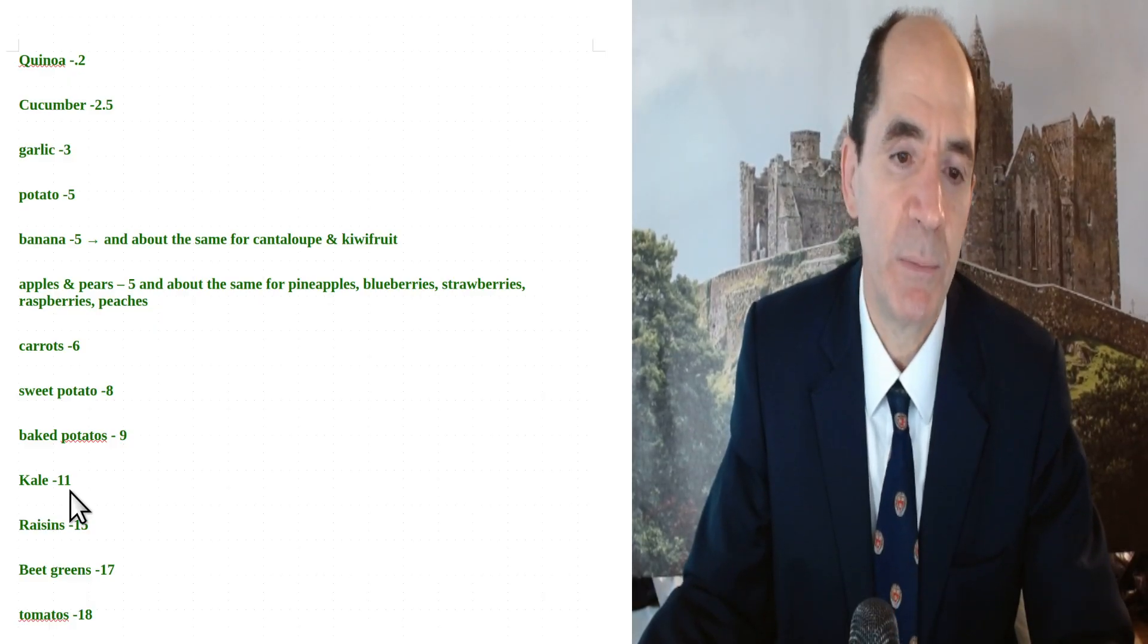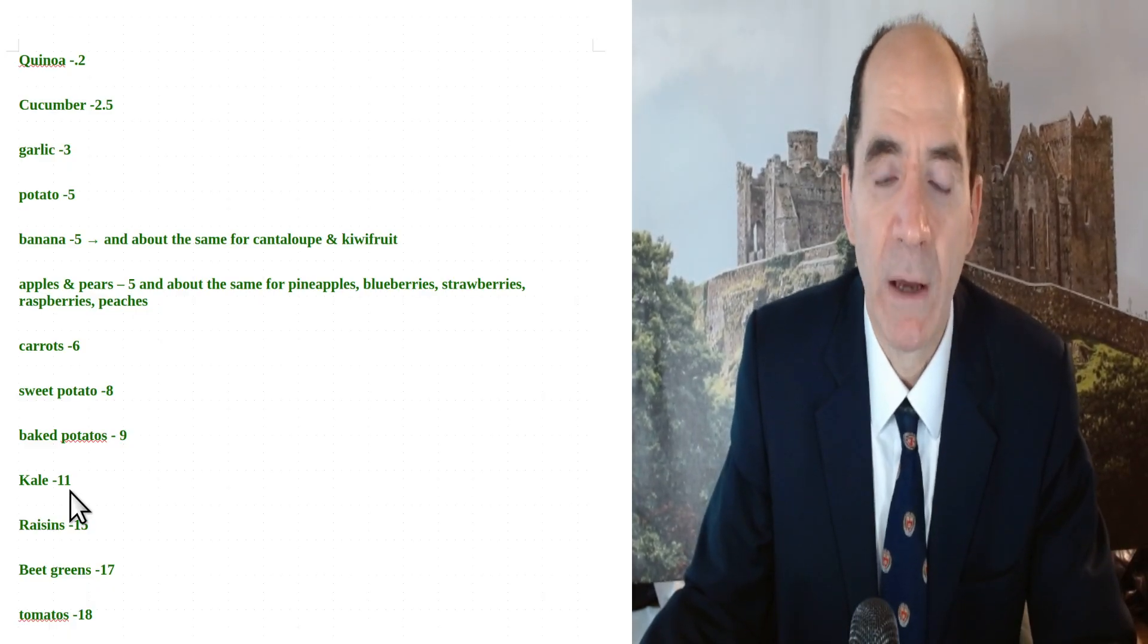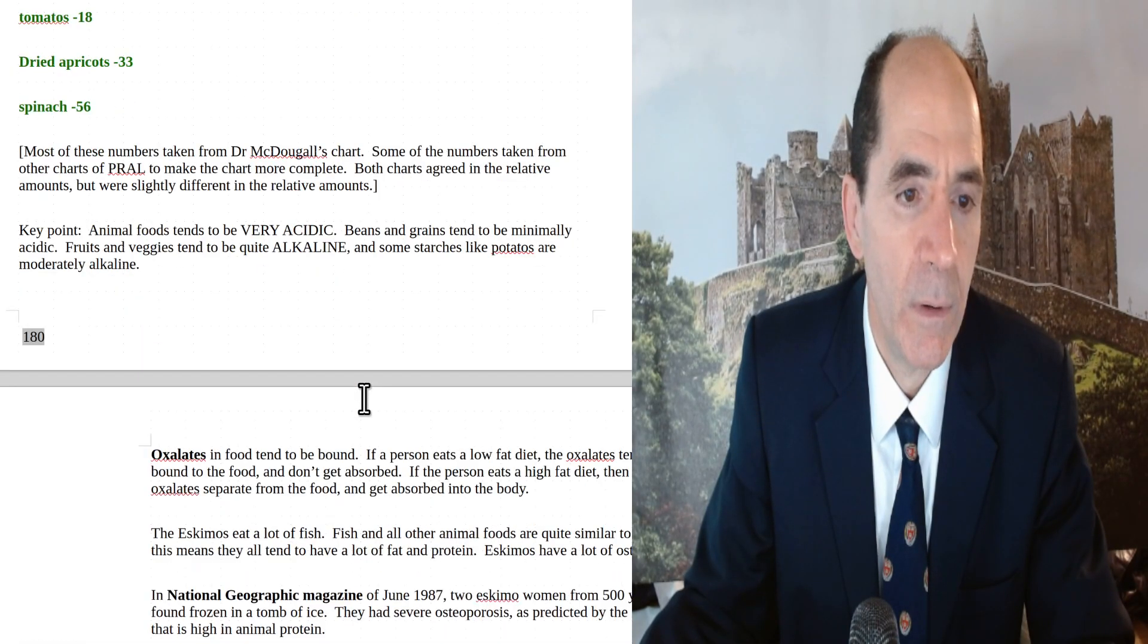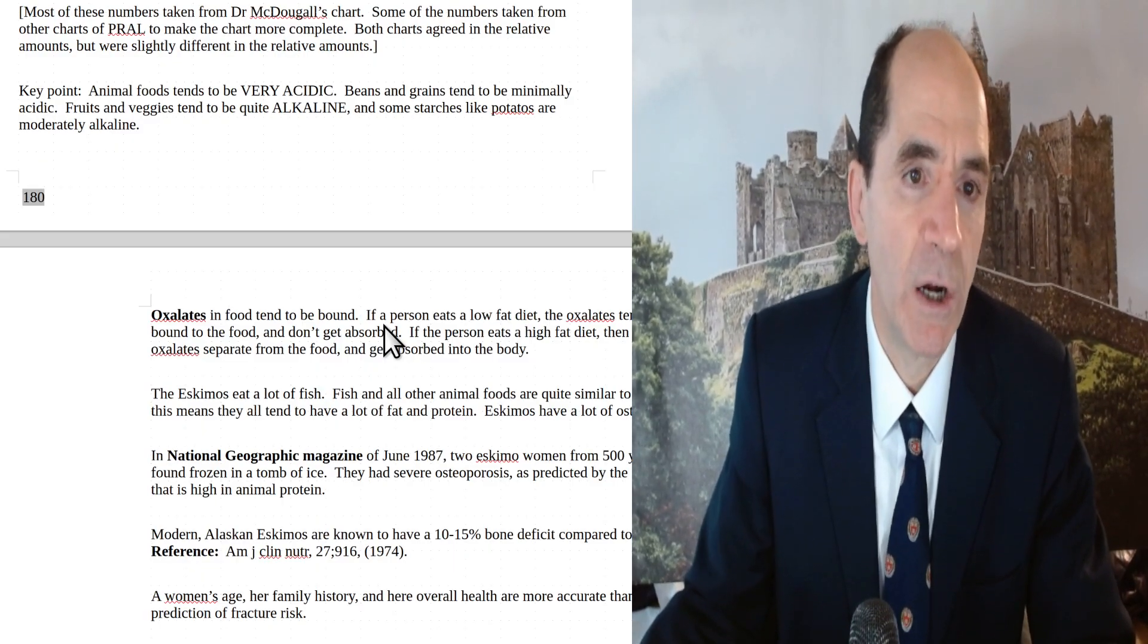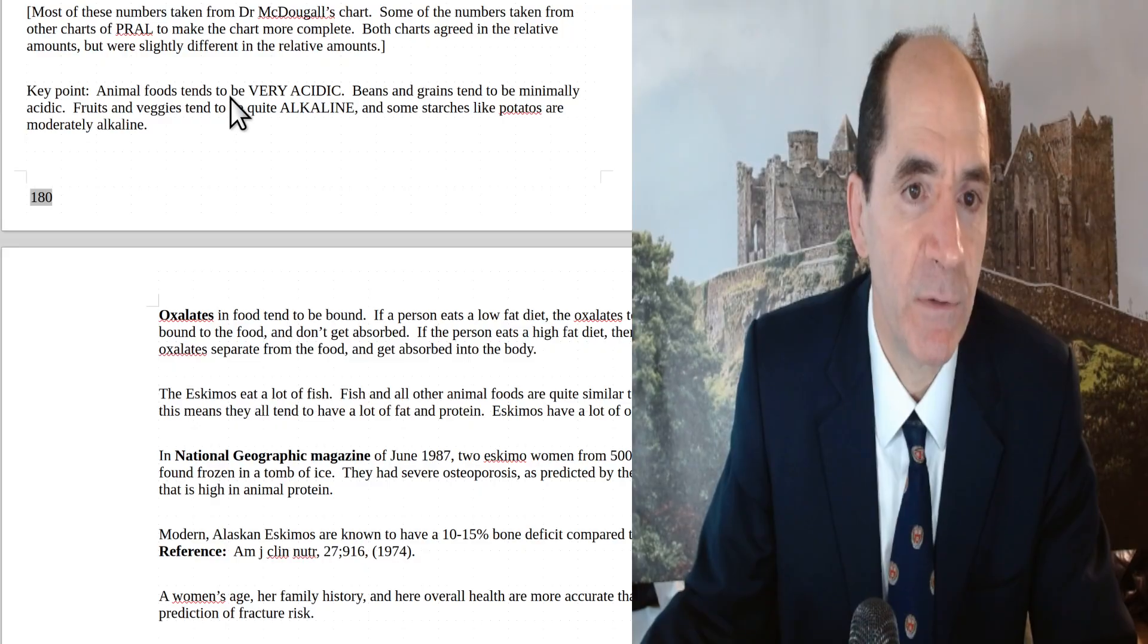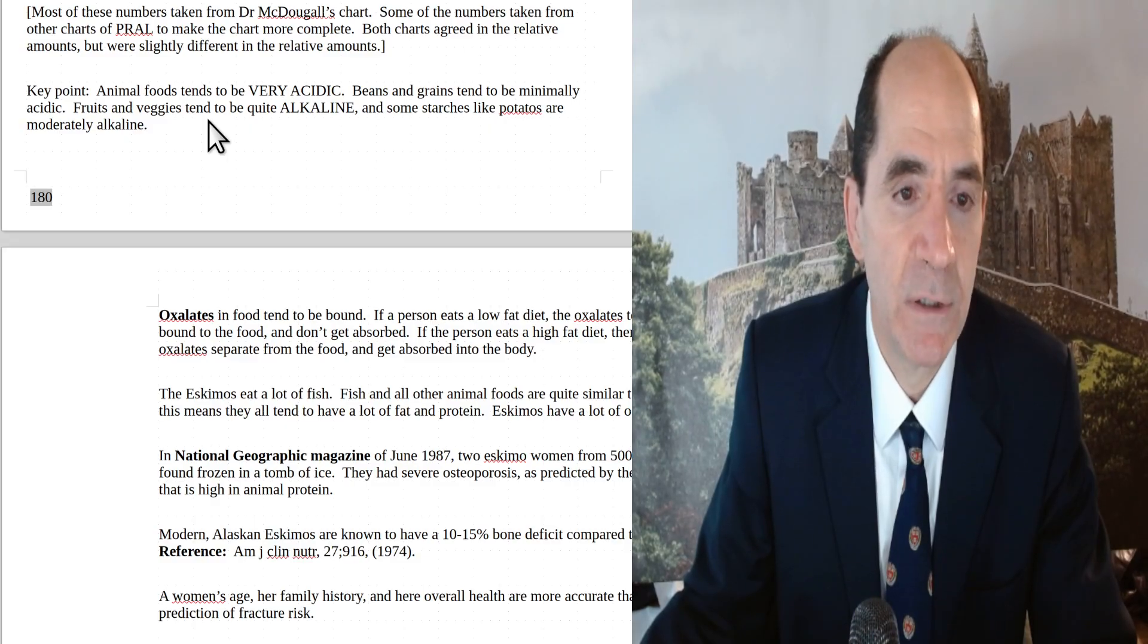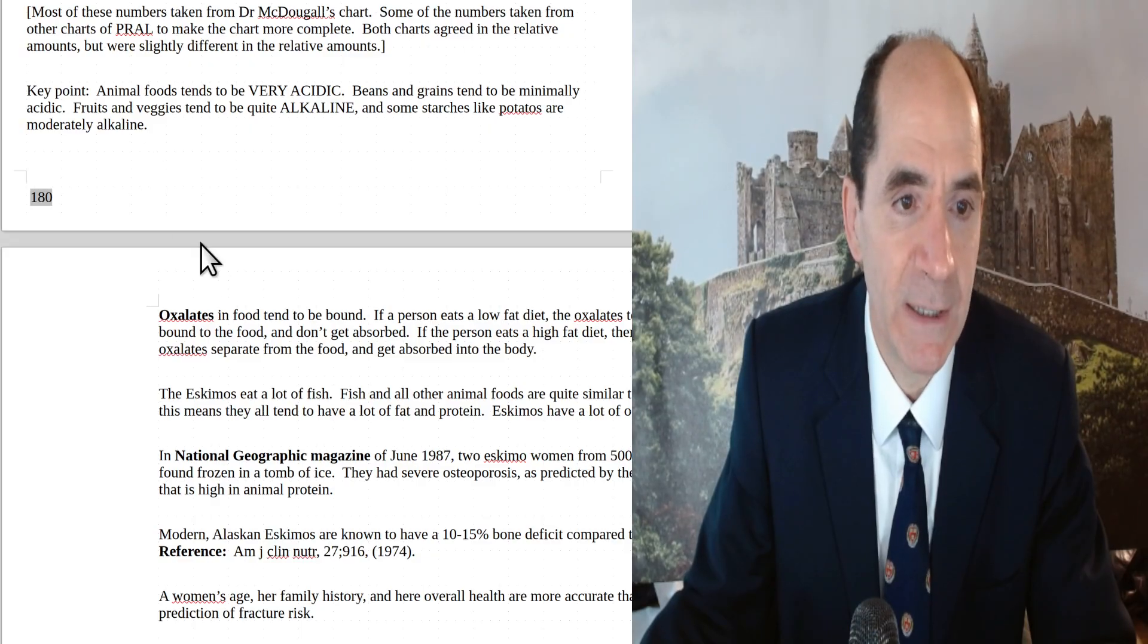The consequences would be those foods would probably be good for cancer patients, depending on the details. But overall, that's going to be more alkaline. In general, normal tissues are favored by an alkaline milieu, microenvironment. Most of these numbers were taken from Dr. McDougall's chart. Some were taken from other PRAL charts to make the chart more complete. Both charts agreed in the relative amounts, but slightly different in the precise amounts. The key point is animal foods tend to be very acidic. The nuts were surprisingly acidic. Beans and grains tend to be minimally acidic, and fruits and veggies tend to be quite alkaline. Some starches like potato are also moderately alkaline.